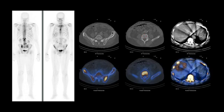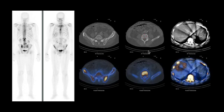On the transaxial CT image in bone windows, you can see here in the left ileum abutting the SI joint there is no abnormal sclerosis. But on the fused SPECT CT image, we see a focus of increased uptake that corresponds to this focus on the whole body image. Similarly, the uptake in the L5 vertebral body does not show any anatomic changes. This happens frequently when there is uptake on a scintigraphic study but the CT portion is negative.